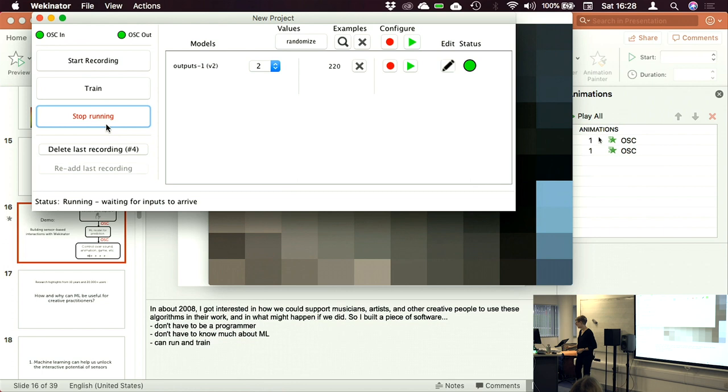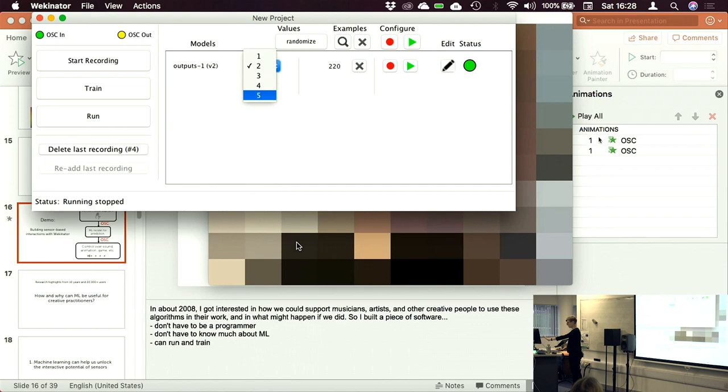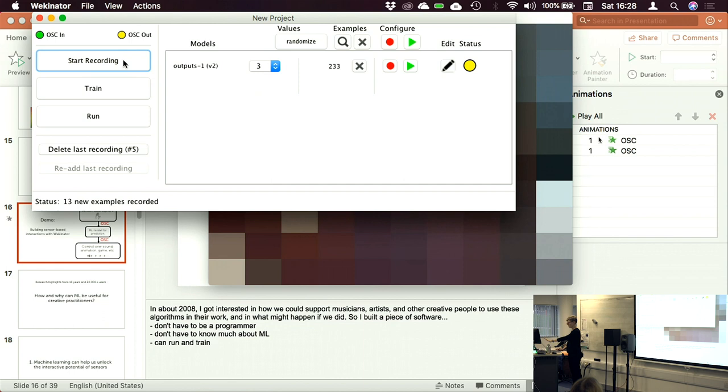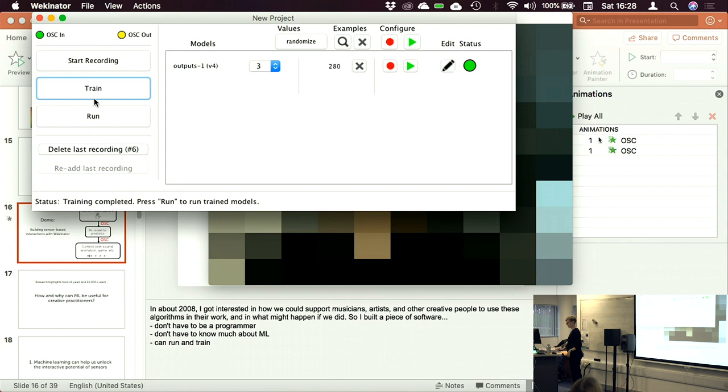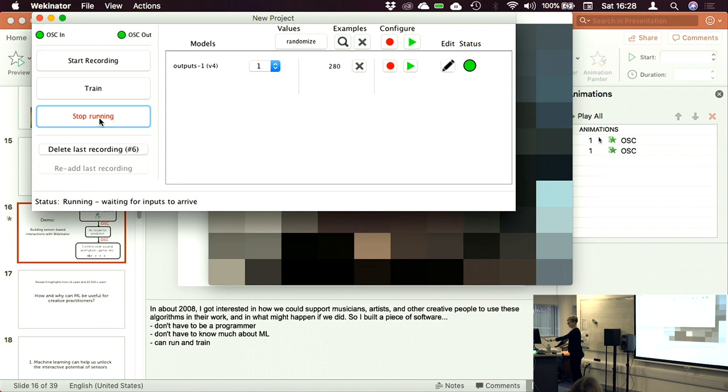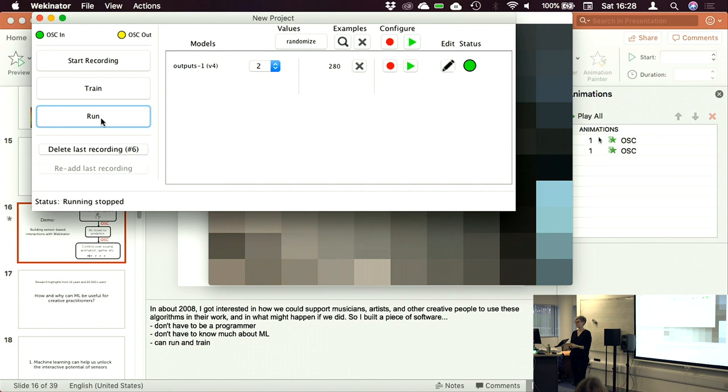So I've corrected it by giving it examples. And if I'm happy with that, I can make it more complicated. Maybe say here's my hand in front of the camera. And that's a third type of sound. And again, if I'm not happy with it, I just give it some more examples of my hand. Okay.